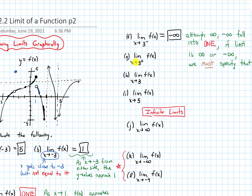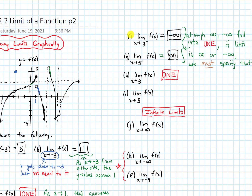Part G: what is the limit as x approaches 3 from the right? As I'm approaching 3 from the right, that part of the graph shows the y values getting infinitely large, so this is going to be positive infinity. For Part H, the overall limit as x approaches 3: since the limits from the left and the right are different, this is definitely does-not-exist.